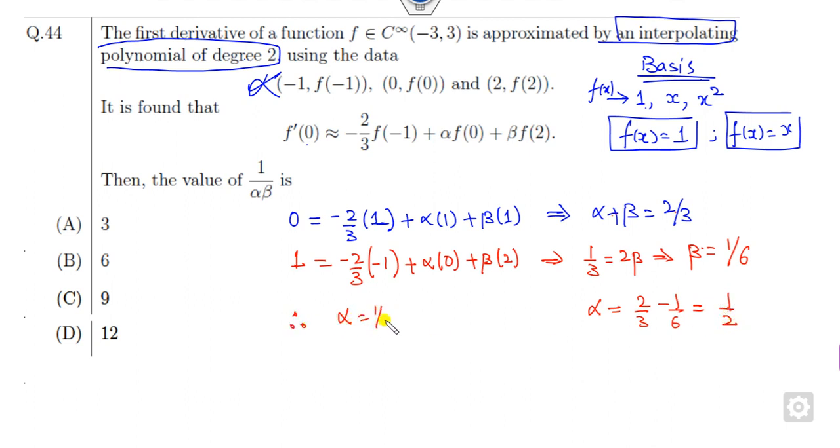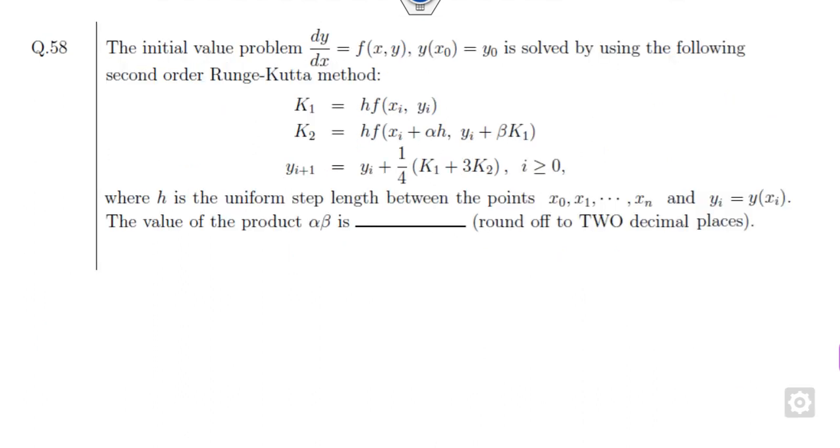Once you know beta is 1/6, substitute it in the first equation. It will be 2/3 minus 1/6, which gives you 1/2. Therefore, alpha is 1/2 and beta is 1/6. What is 1 upon alpha beta? Alpha beta is 1/12, so the right answer is 12. The answer is D as the correct option. There is no need to worry about the other terms. Always use the basis as a very simple method. If they are asking about degree 3, then you can take the basis as 1, x, x squared, x cubed, and so on.